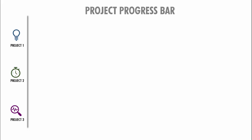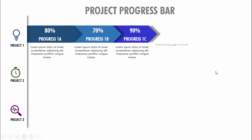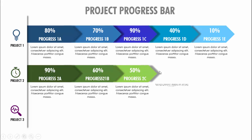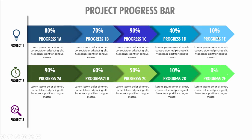In today's tutorial I'm going to show you how to create a project progress bar slide in PowerPoint. Here I have put three projects — project one, project two, and project three — and when I click it will show you the progress of each project. I've given some different color combinations and you can put the percentage completed for each particular project.